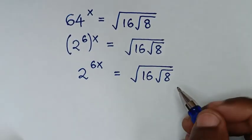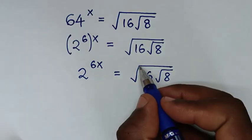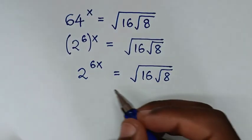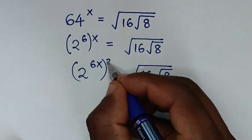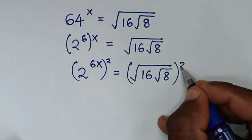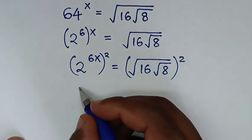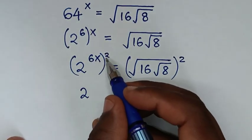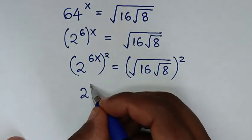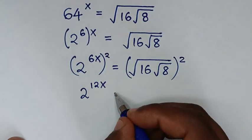In the next step, (2^6)^x becomes 2 to the power of 6x. Then, to remove the outer square root on the right-hand side, we square both sides, giving us 2 to the power of 12x.